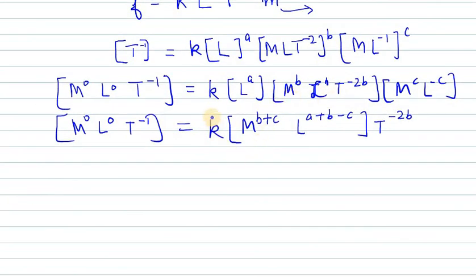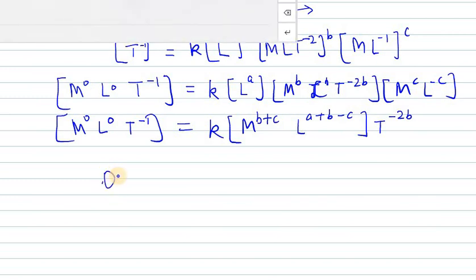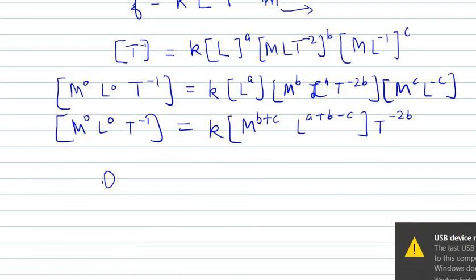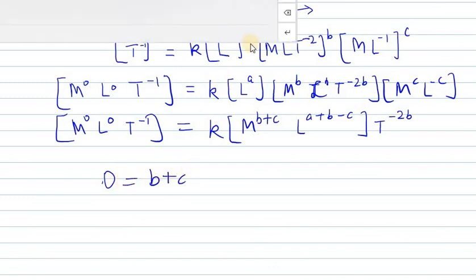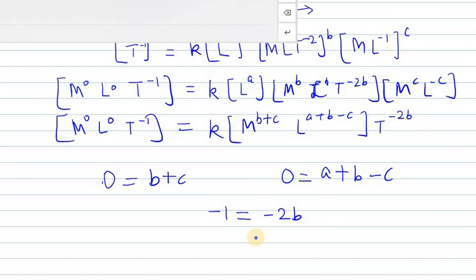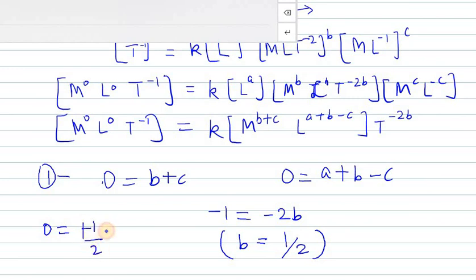Equating M: 0 equals B plus C. Equating L: 0 equals A plus B minus C. Equating T: minus 1 equals minus 2B, so B equals one-half. Putting B equals one-half into equation 1: 0 equals one-half plus C, so C equals minus one-half. We now have the values for B and C and can find A.